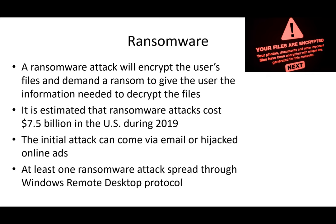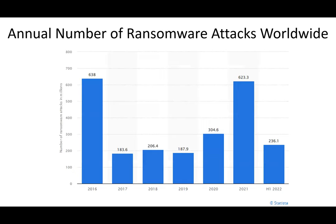Ransomware encrypts your files so you can't access them, then demands money to decrypt them. They prefer Bitcoin because it's more or less untraceable. Costs were estimated at $7.5 billion in 2019. The initial attack often comes via phishing — it's the most common attack vector. Another vector is Windows Remote Desktop. A chart shows ransomware attacks at 638 million in the first half of 2022 alone, so the annual total is likely much higher.